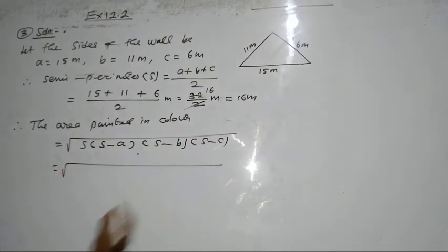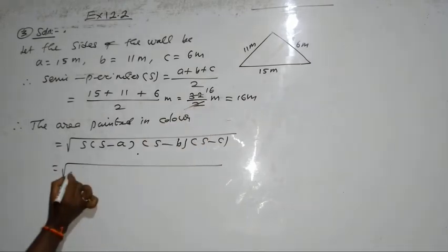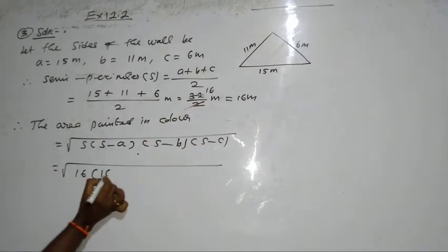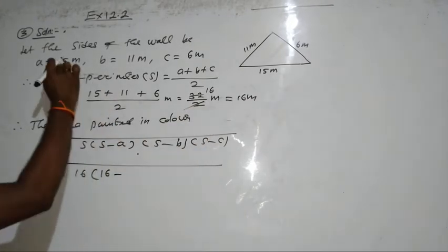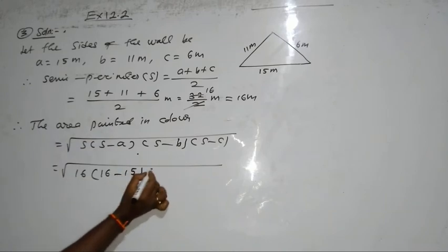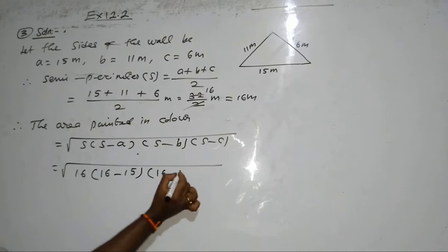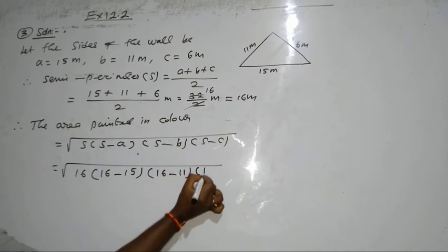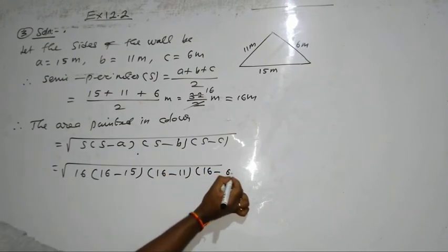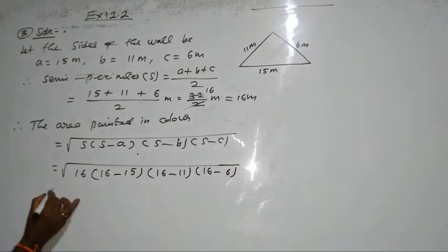That is root over. S value is 16. And S minus A, A is 15. So, again, S is 16, B is 11. Now, 16 minus C is 6. So, root over.